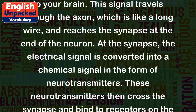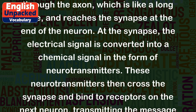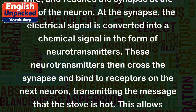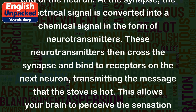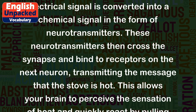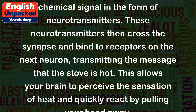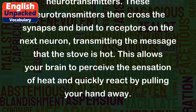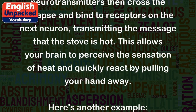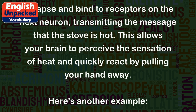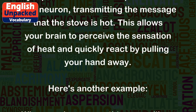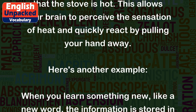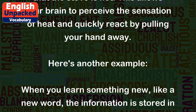At the synapse, the electrical signal is converted into a chemical signal in the form of neurotransmitters. These neurotransmitters then cross the synapse and bind to receptors on the next neuron, transmitting the message that the stove is hot. This allows your brain to perceive the sensation of heat and quickly react by pulling your hand away.